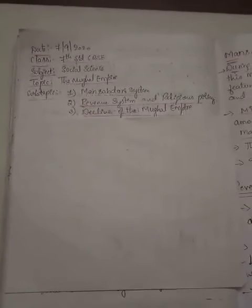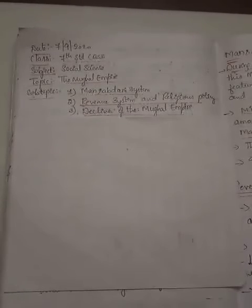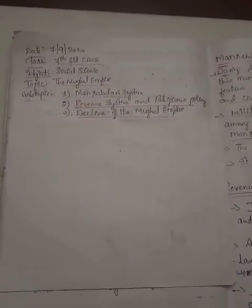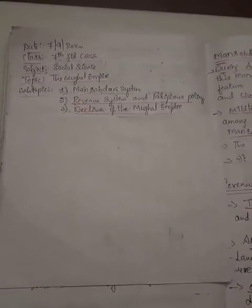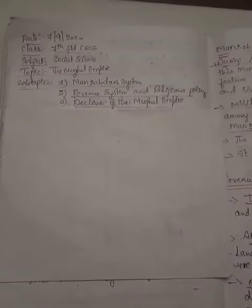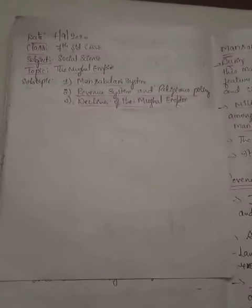Different persons were appointed for handling different departments like military, royal household, and revenue. For provincial administration he appointed Subadhar for military affairs and Divan for maintaining land revenue records. The Suba was further divided into districts or Sarkars, then into Parganas and villages controlled by Panchayat. Towns were taken care of by the Kotwal, who was responsible for maintaining law and order and records of population, births, and deaths.